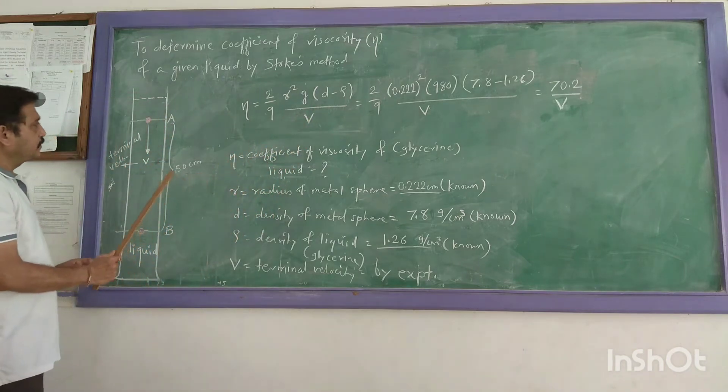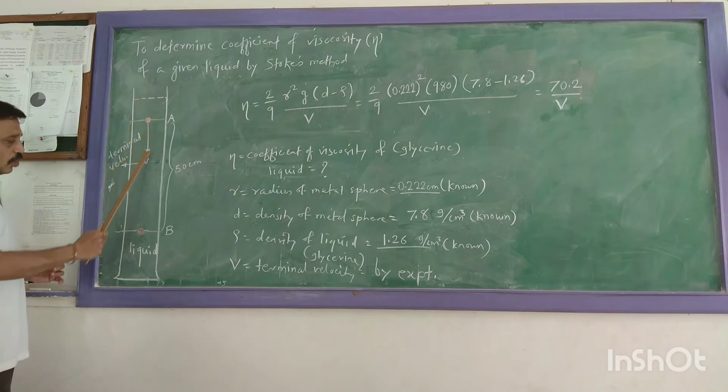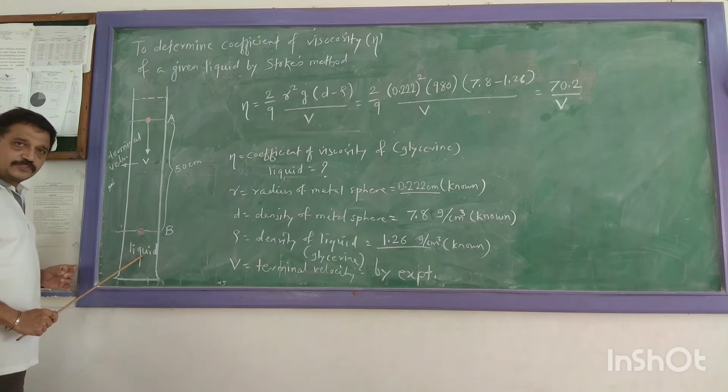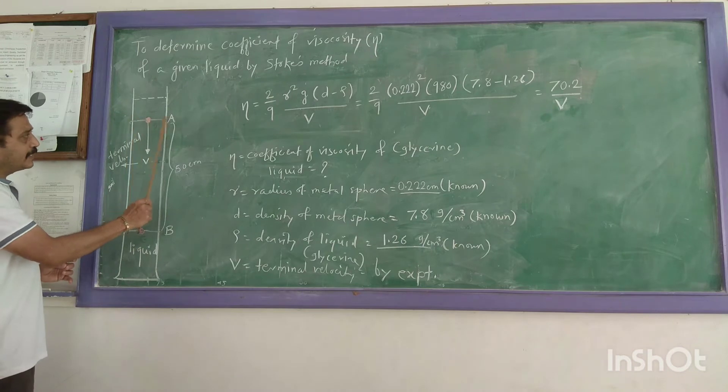So, what is terminal velocity? Here we are going to take a tall glass jar. Inside this is a liquid. And here there are two markings: markings A and B.